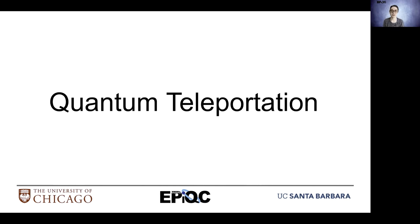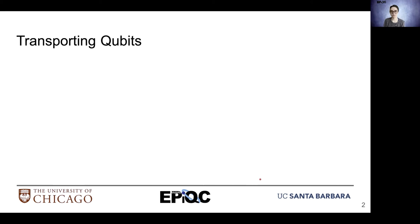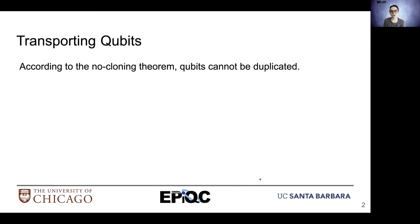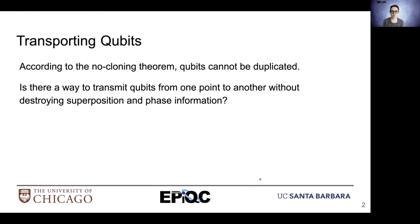In this video we're going to discuss quantum teleportation. According to the no-cloning theorem, we can't copy qubit state. So how do we transmit qubits from one point to another without destroying superposition or phase information?